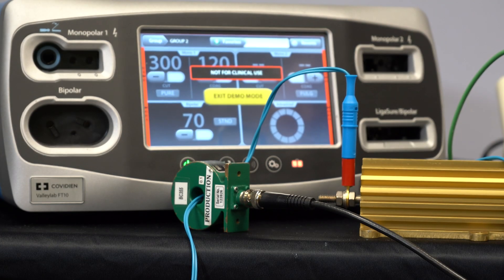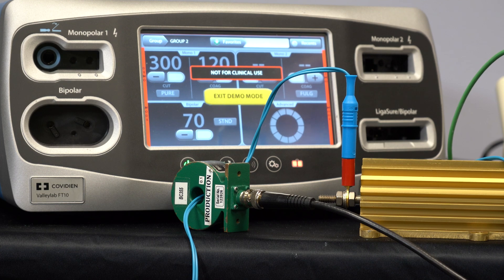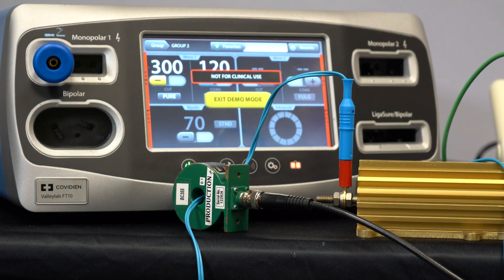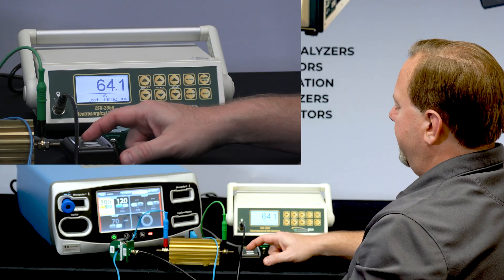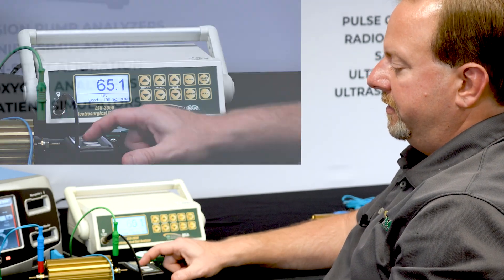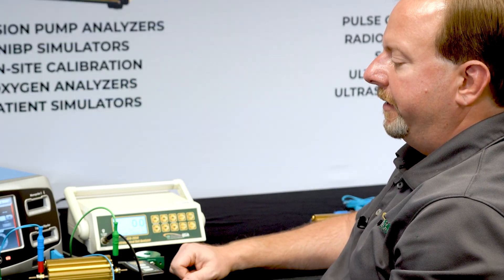Now it doesn't think there's anything plugged into my monopolar one port so it won't let me activate the generator. I'll plug in the adapter. It will allow me to activate the generator and we can take our measurement and determine whether that's within the limits for cut and coag at maximum power. Thank you for watching.